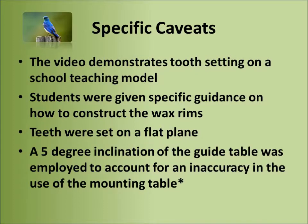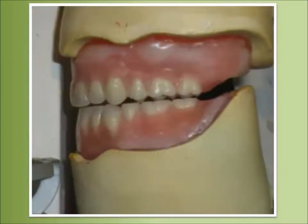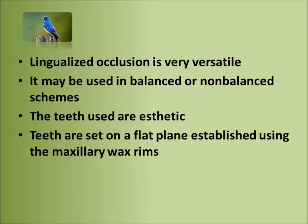Here's what the setup looks like. Let's go over some of the basics of this particular bilingualized setup. One really important concept to understand is freedom in centric. The case is mounted on the cast with a retruded jaw relationship. We will set the condylar inclination at 0, as well as the lateral at 0.